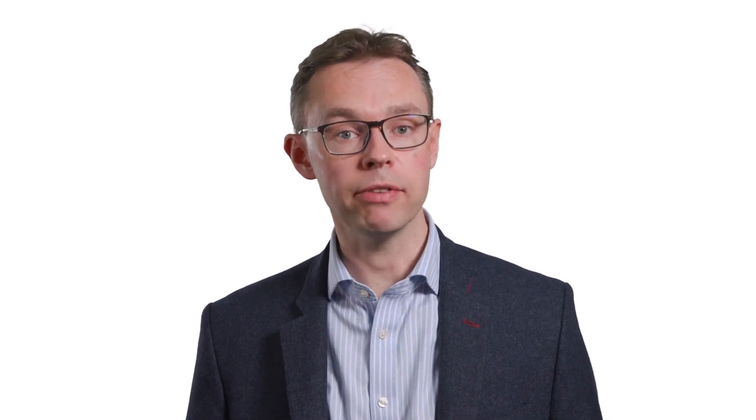The truth, though, is stranger than that power plant analogy suggests. Mitochondria have their own internal structure, their own protein-making machinery, and even their own genome, separate from the nuclear genome. They are the descendants of a remarkable symbiotic event that happened about two billion years ago, at least a billion years after the glycolytic enzymes had evolved.